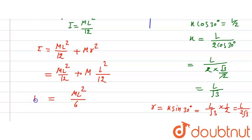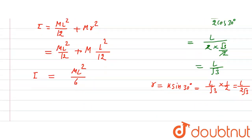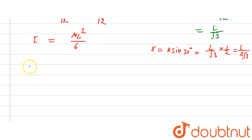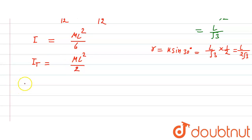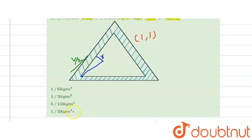The moment of inertia of one rod is ml²/6. For all three rods, the total is 3 · ml²/6 = ml²/2. Since m = 1 kg and l = 1 m for each rod, I_total = 1/2 kg·m². So the answer is 1/2 kg·m², which is the fourth option.